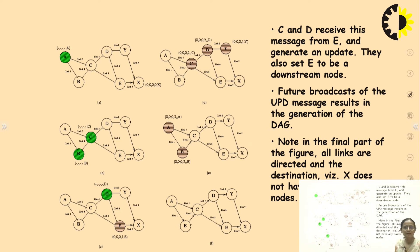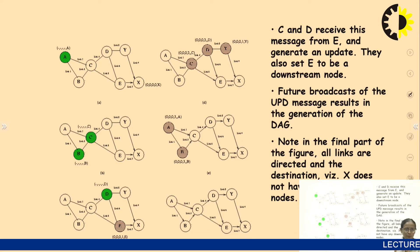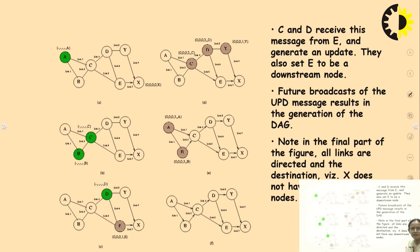C and D receive this message from E and generate an update. They also set E to be a downstream node. Future broadcast of the UPD message results in the generation of the DAG. We are sending the QRY packet first, destination is receiving, then it is working in the reverse direction and it is sending the UPD message. This UPD message helps in formation of the DAG graph. Note in the final part of the figure, all links are directed and the destination X does not have any downstream node in this case.